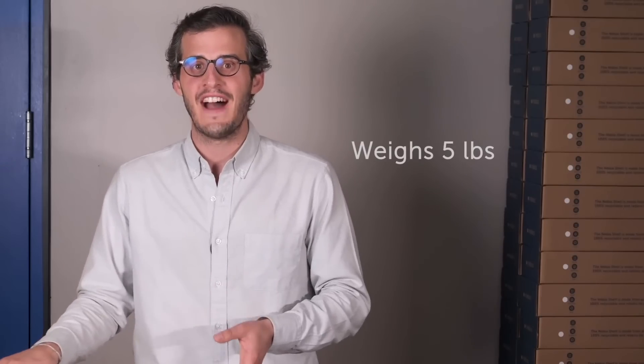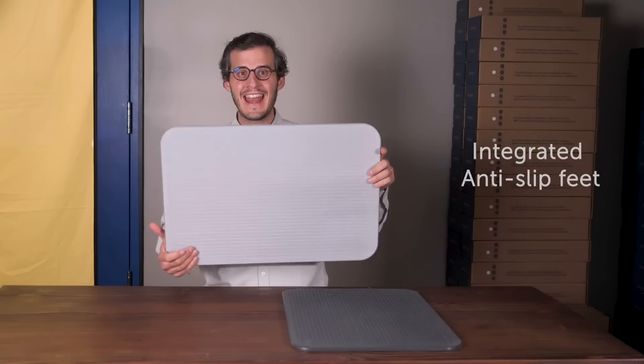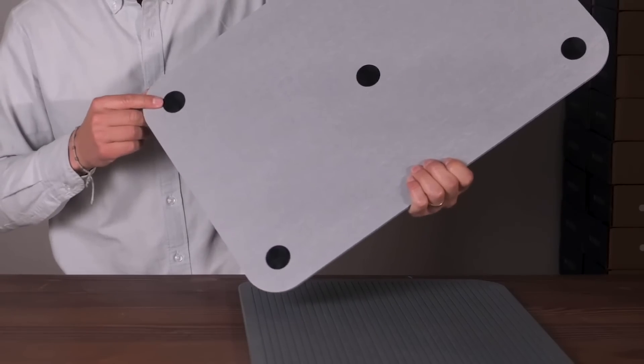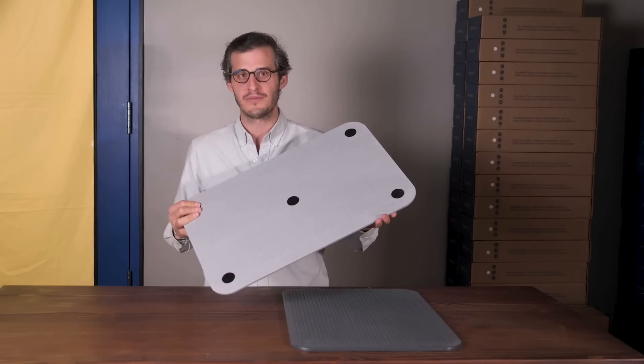The Quick-Dry Earth Mat weighs five pounds and measures 24 by 16 inches. It comes with integrated anti-slip feet. It can absorb up to 150% of its weight in water—that's seven and a half pounds of water.